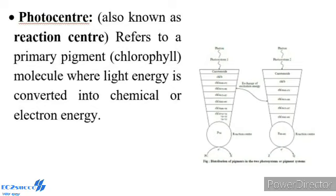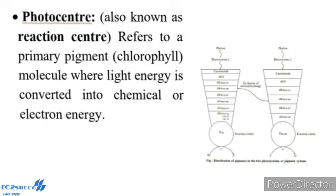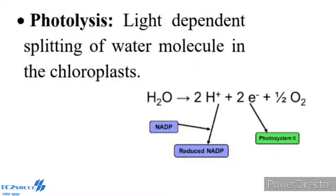Light-harvesting Complex: Also called the two-pigment system. The discovery of the Emerson effect clearly indicated that the photosynthetic pigments are organized into two discrete photochemical light-harvesting complexes, that is LHC, also called Photosystem I and Photosystem II. These are named in the sequence of their discovery, not the sequence in which they function during the light reaction. Each photosystem has a photocenter or reaction center fed by about 200 harvesting pigment molecules.